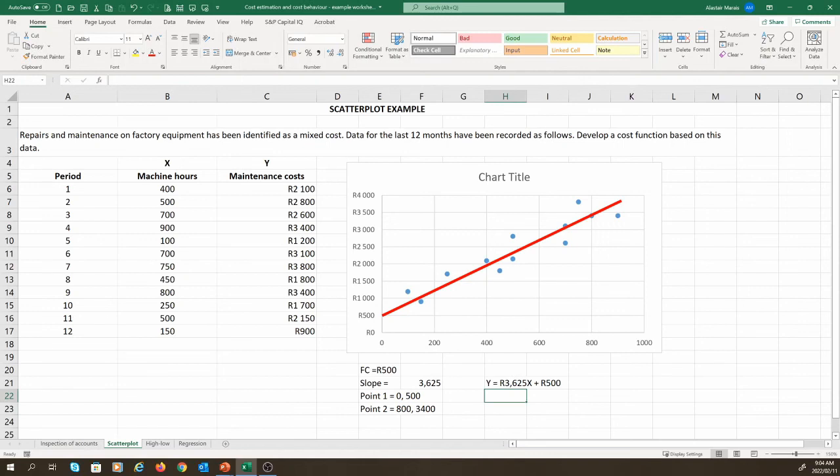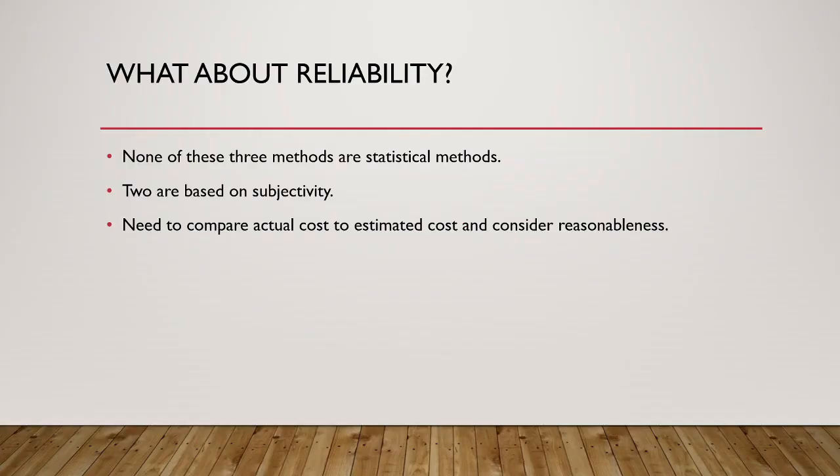In our next two videos, we are going to use the same data and see how good our estimated line is in comparison to the high-low method and regression. At this point, I think it is important to highlight that for these three methods, we have consistently skipped our last step of testing the reliability of the cost function. This is because these three methods are not statistical methods, and therefore we don't have a specific measure of reliability. Rather, what we see is that these methods are open to a level of subjectivity, particularly the inspection of accounts and scatter plots. So to assess the reliability of these methods, we will have to compare the estimated cost to the actual cost and determine if the variance between them is reasonable. If not reasonable, we can tweak our cost functions to make them better. Again, this assessment of reasonableness as well as the tweaking of the cost functions are likely to be subjective.